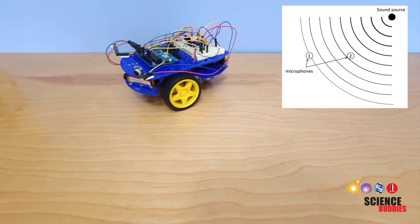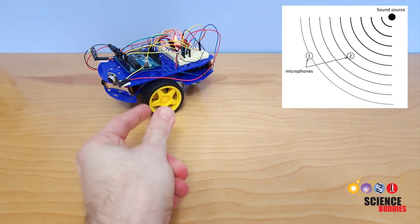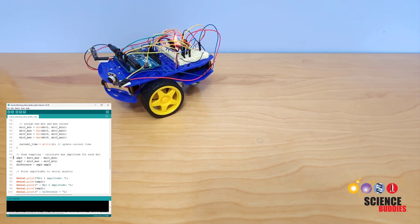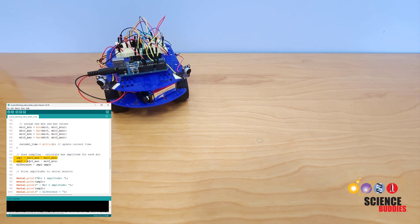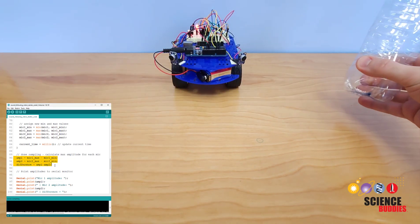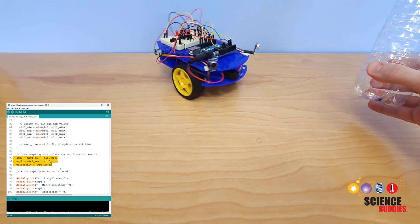This works because the sound will appear louder to the microphone closer to the source. The code compares the amplitudes of the sounds recorded by the two microphones and uses that information to decide which way to drive.